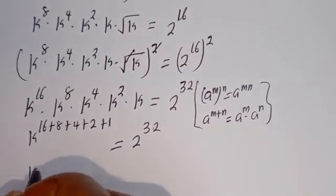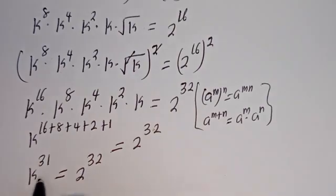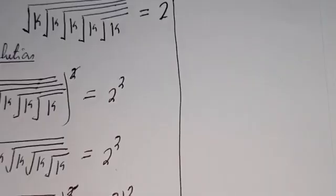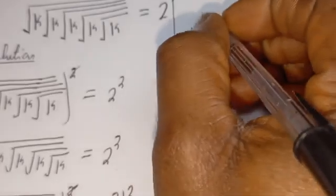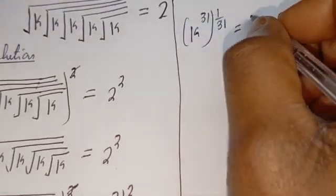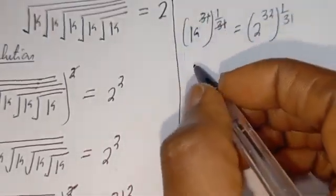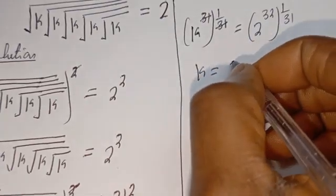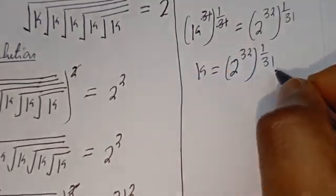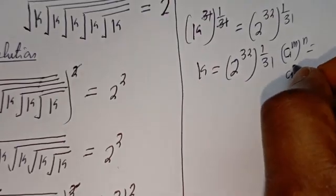Then k to the power of 16 plus 8 plus 4 plus 2 plus 1, which is 31, equals 2 to the power of 32. We are looking for the value of k, so let's multiply the exponent of both sides by 1 over 31. Then k to the power of 31 times 1 over 31 equals 2 to the power of 32 times 1 over 31. The 31 and 1 over 31 cancel, leaving k equals 2 to the power of 32 over 31, using the rule A to the power of M to the power of N equals A to the power of M times N.